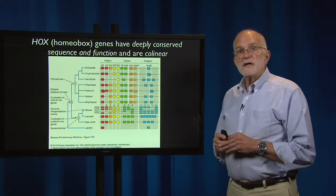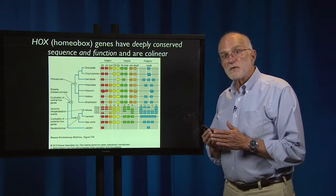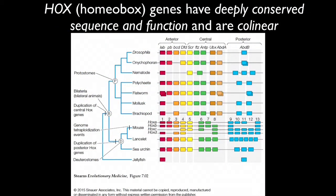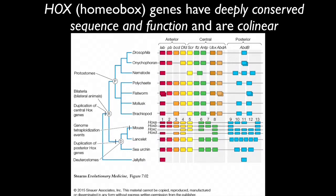Hox genes are deeply conserved, meaning they are shared by many different organisms, they originated long ago, and they have retained their function and sequence on chromosomes. They have the interesting property of being collinear — the sequence on the chromosome is analogous to the part of the body in which that gene is turned on or off. The anterior genes are on the left; the ones controlling the rear of the body are on the right. This phylogenetic tree shows that genes expressed in the anterior of Drosophila are also expressed in the anterior of worms, mice, and sea urchins — this is a very ancient set of genes.